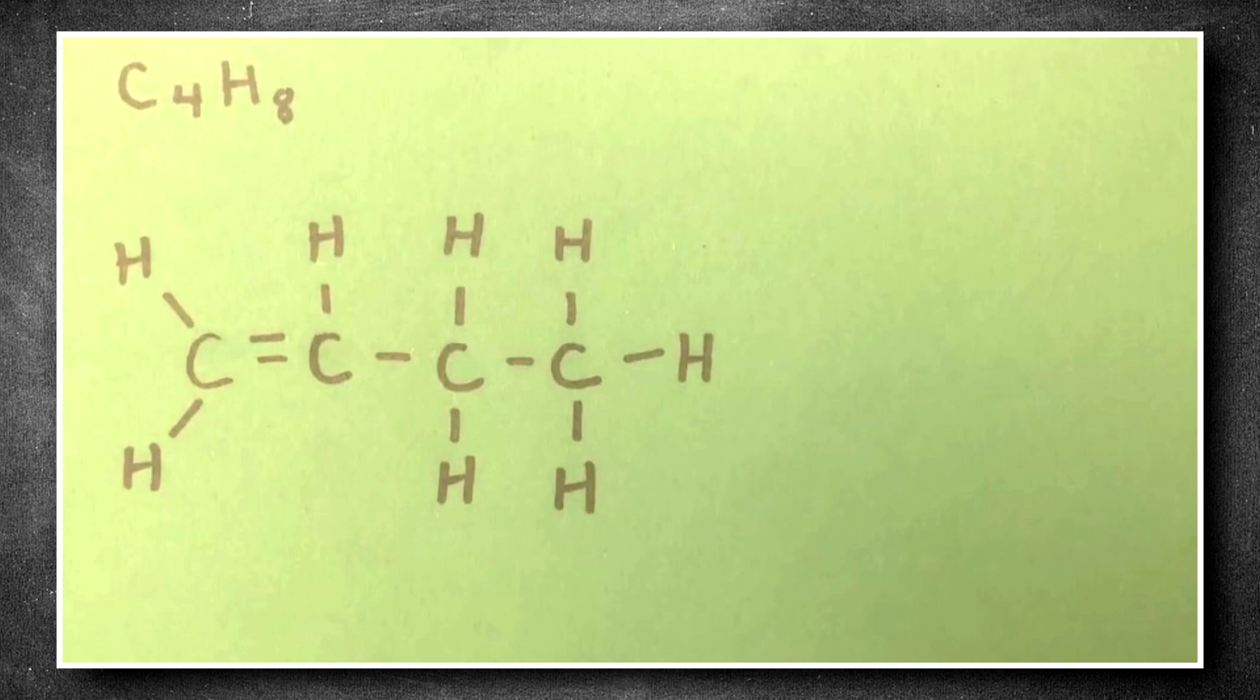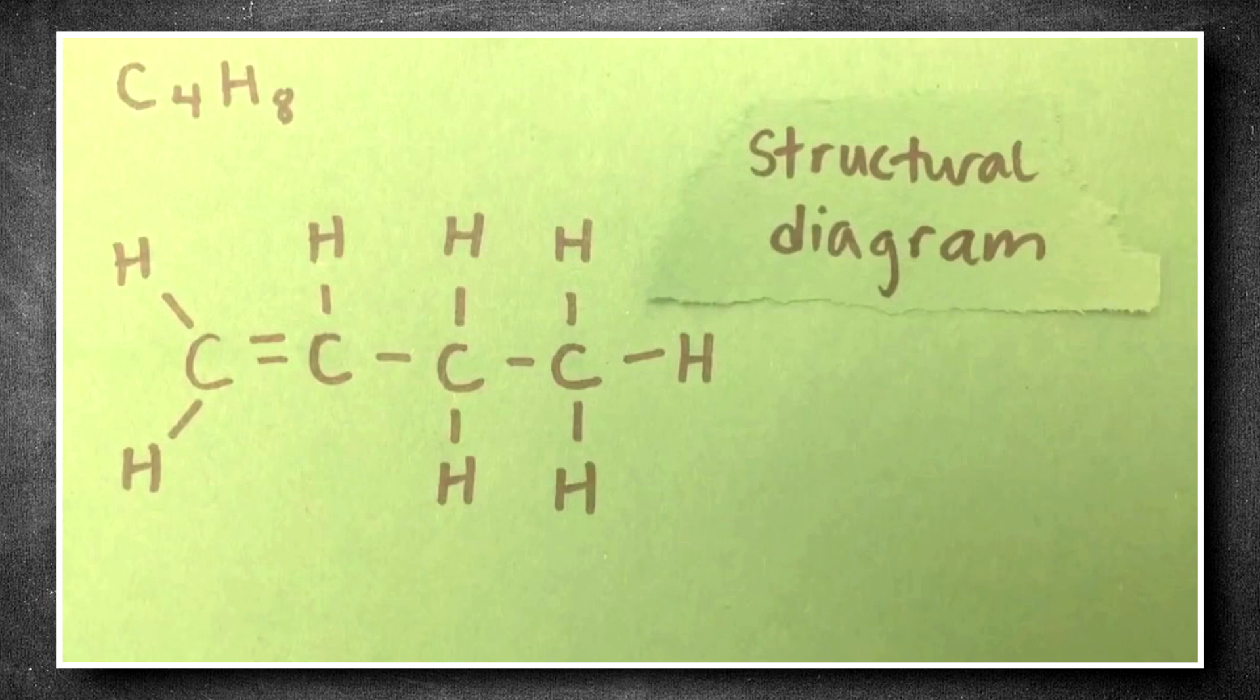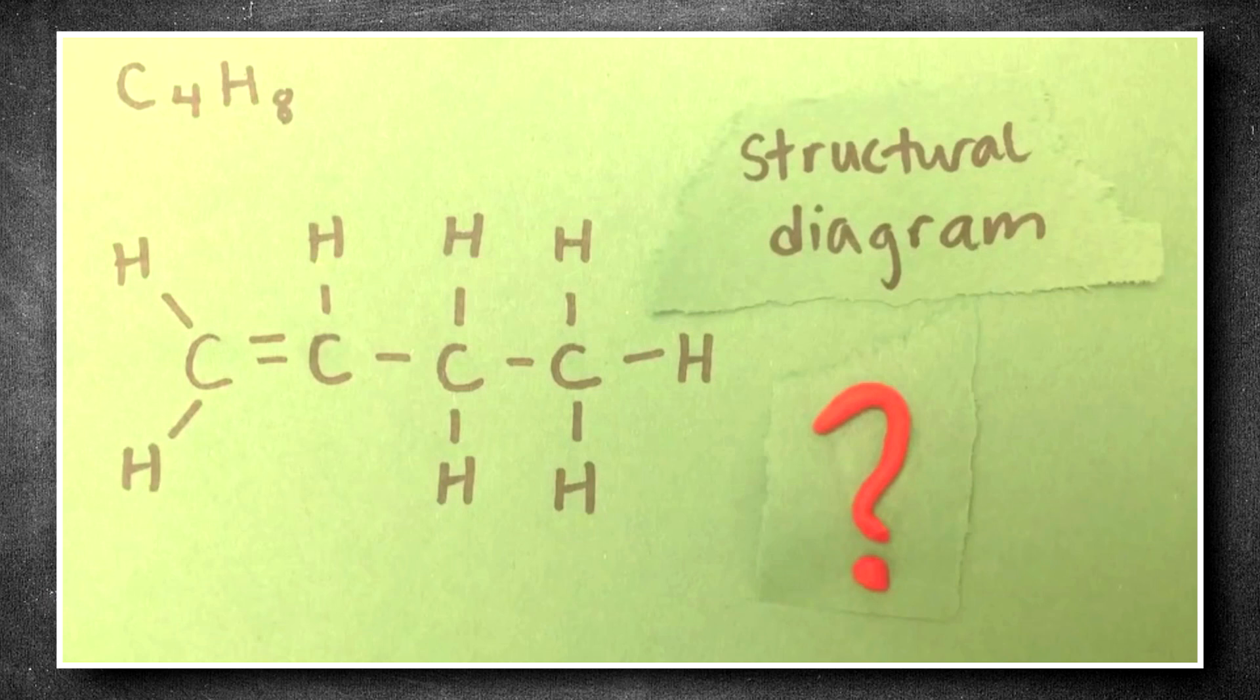This written representation is called a structural diagram. It shows how atoms are arranged and how they are bonded to each other. But there's a problem. Structural formulas can take up a lot of space, so we need a shorthand to simplify things.